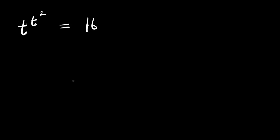Hello, how to solve this cascaded exponential problem? This is t to the power of t to the power of 2, and this equals 16. We will be solving for the value of t that will satisfy this equation — that means we make the left hand side of this equation to be the same as the right hand side.